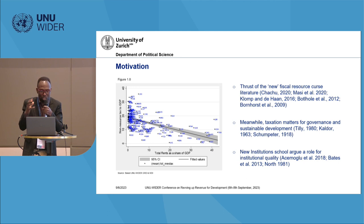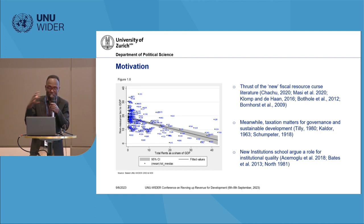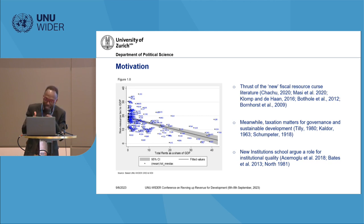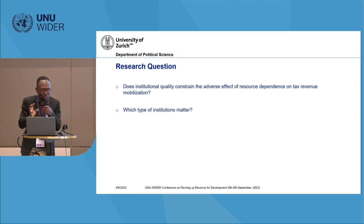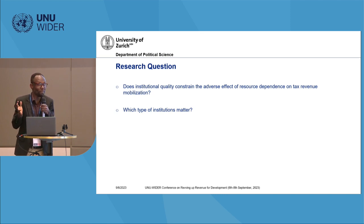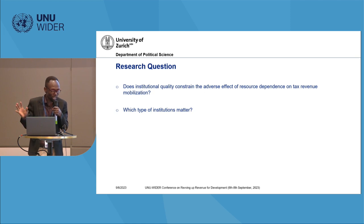What we try to do is also reflect on the new institutional literature, which suggests that the quality of institutions can play a role in shaping economies. North suggests that institutions are the rules of the game — they shape incentives and constrain behavior. Acemoglu's famous 2001 paper suggests that quality institutions can deliver long-term development. In that respect, we try to ask ourselves whether the quality of institutions in a country mitigates the adverse effect of natural resource dependence on tax revenue mobilization, and what types of institutions matter — political institutions, economic institutions, and so on.